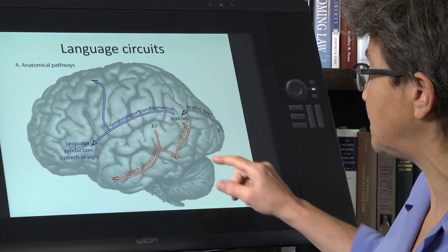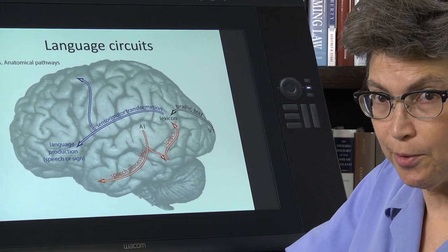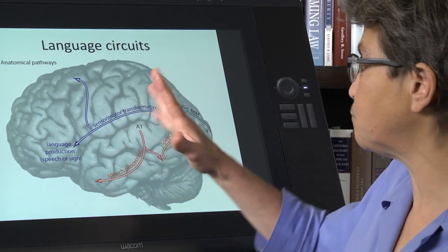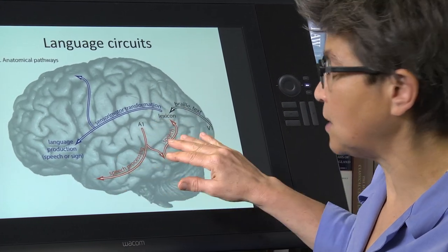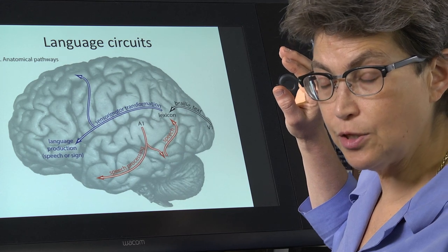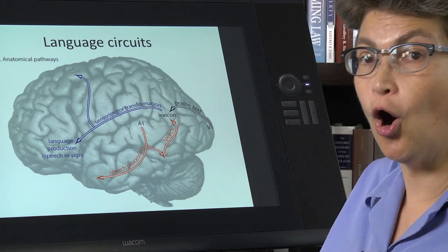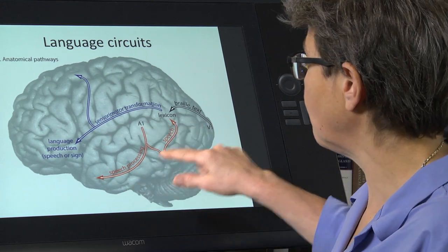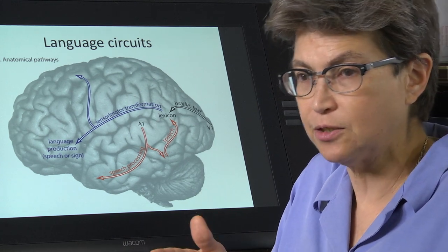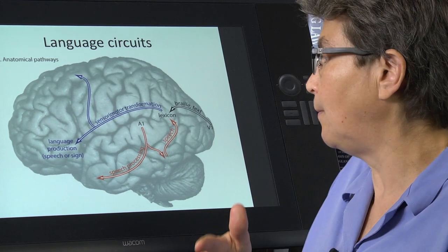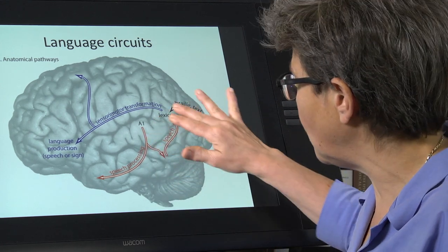Information comes in. It comes into both auditory cortices, both primary auditory cortices. And it's processed in both places, but it ends up being processed to the point of semantic understanding on the left. And so information gets processed from little bits of information. Is that a t or a b, and then to phonemes, and then to syllables, and then to sentences.